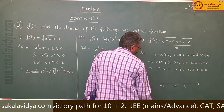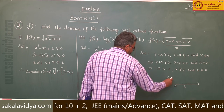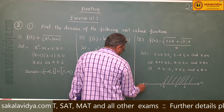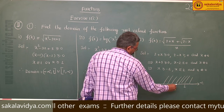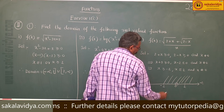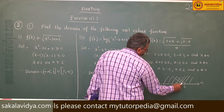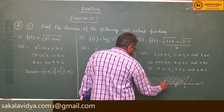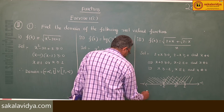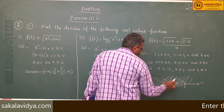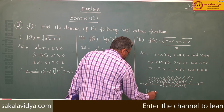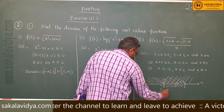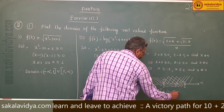Now take the number line: this is minus 2, this is 0, this is 2. Since 0 is not included, but minus 2 and 2 are included, the domain is equal to minus 2 to 0 union 0 to 2, i.e., [-2, 0) union (0, 2].